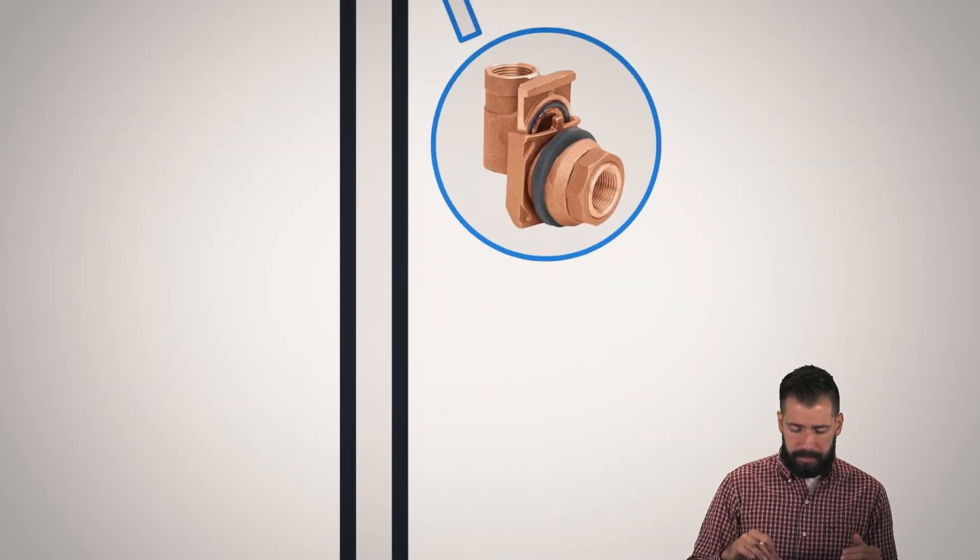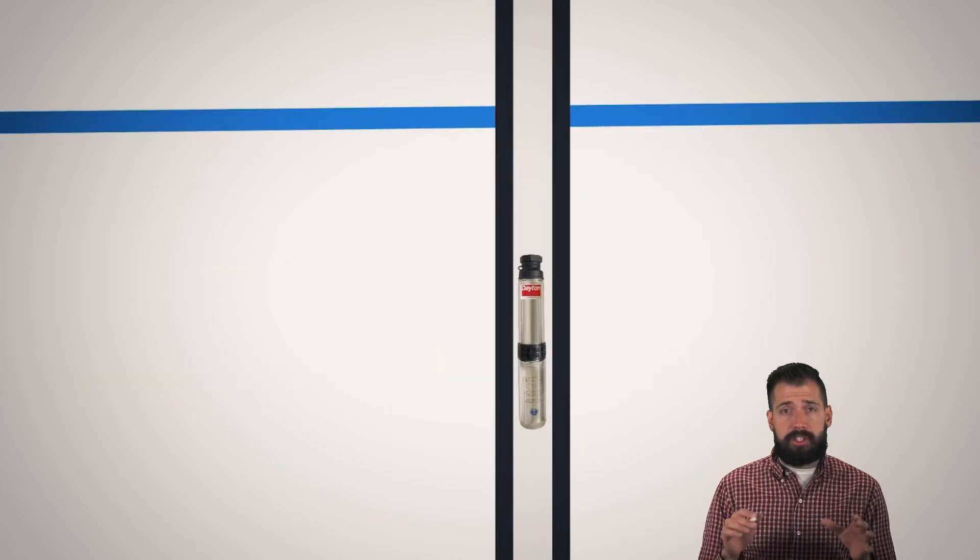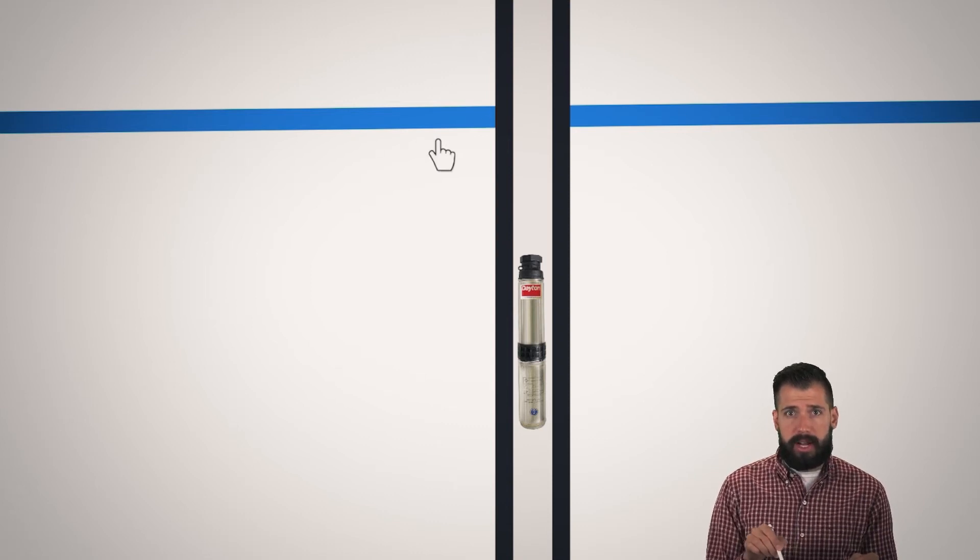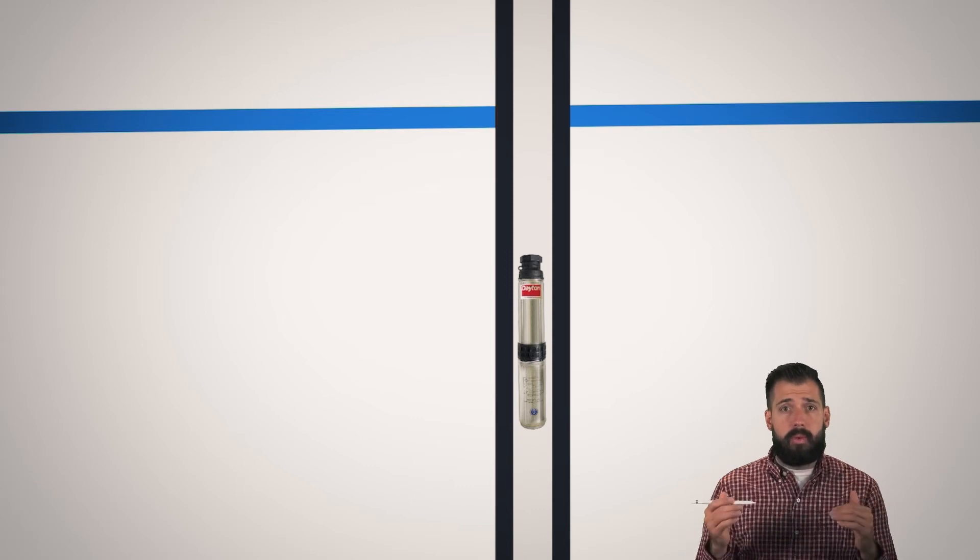Now, the next thing to take a look at is when we get down to the well, the actual pump is right here. And you can see that we have this blue line. And what that blue line does is indicates that this is where the water table starts.